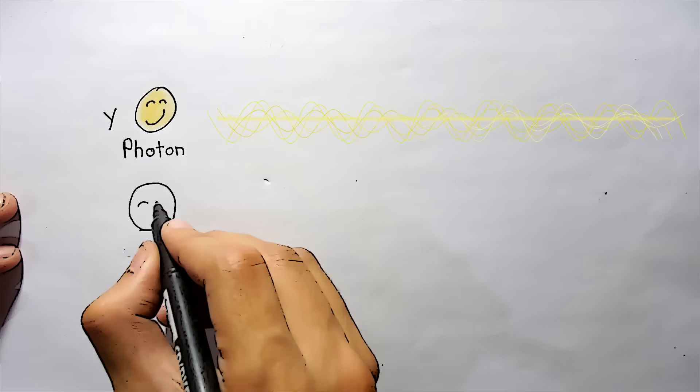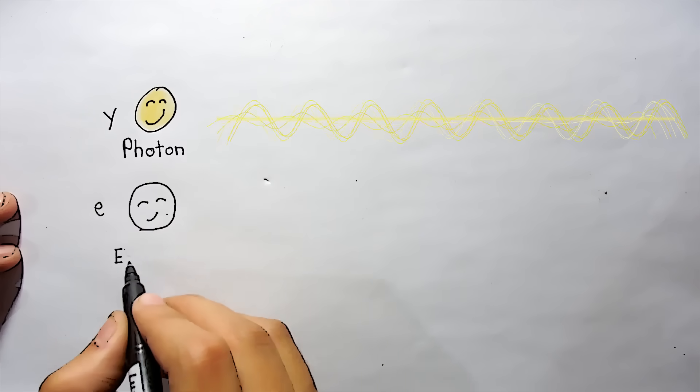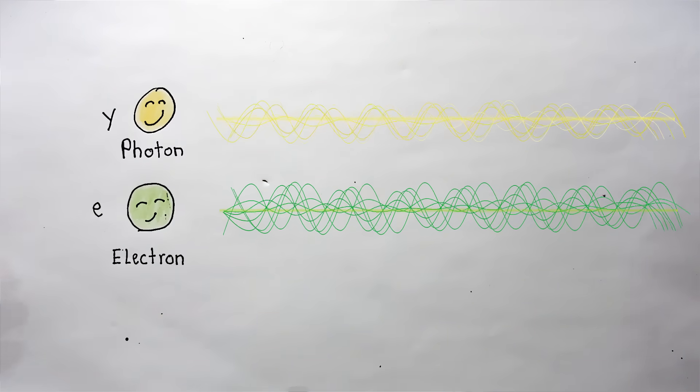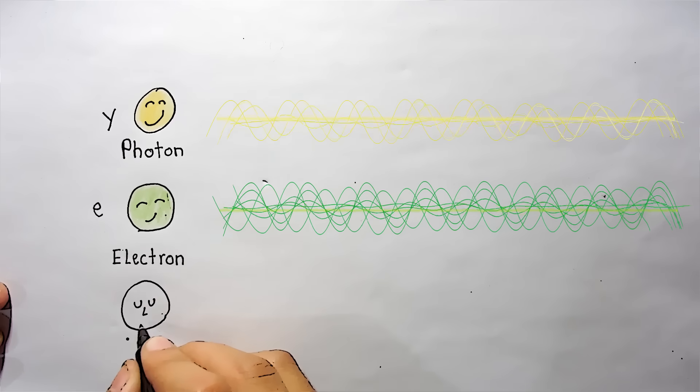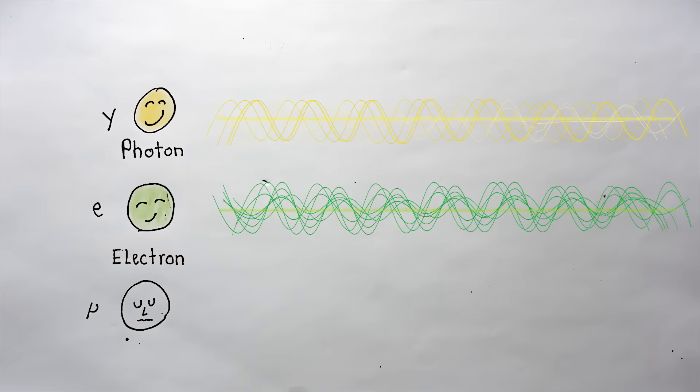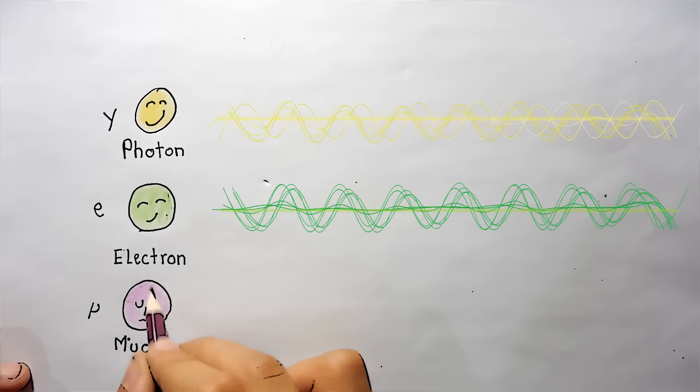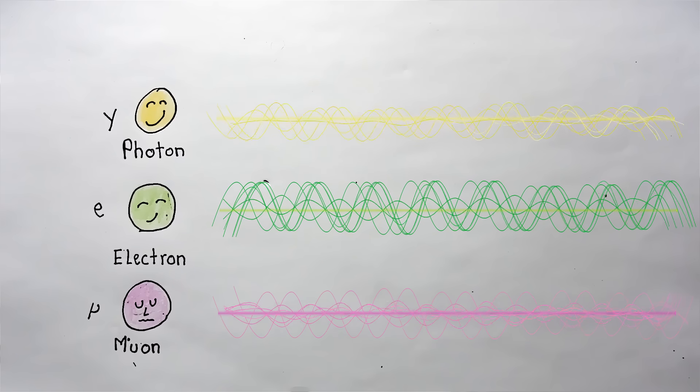So one field for all photons in the universe, one field for all electrons, one field for all neutrinos, and so on. And these fields exist everywhere.